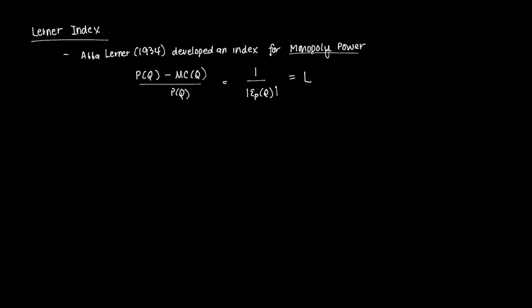The Lerner Index is an index of monopoly power which was created by Abba Lerner. It is essentially a measure of a firm's monopoly power in terms of the extent to which the profit-maximizing firm would set its price higher than marginal cost.